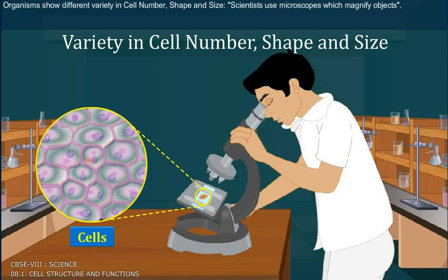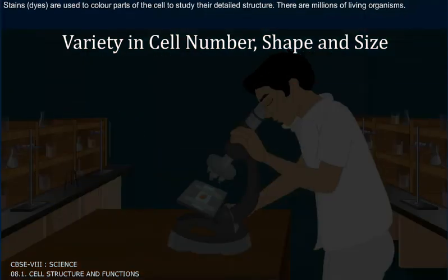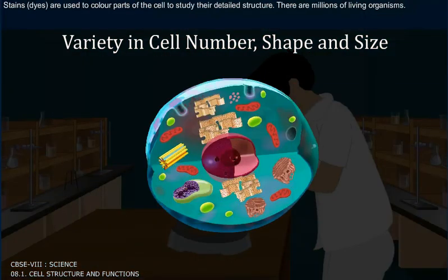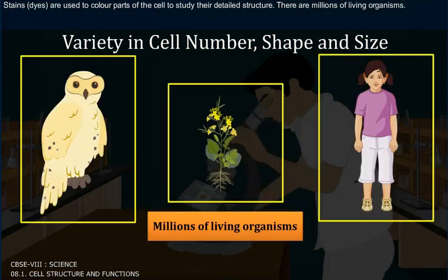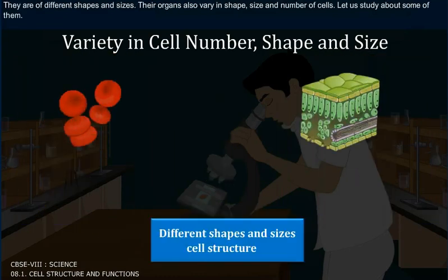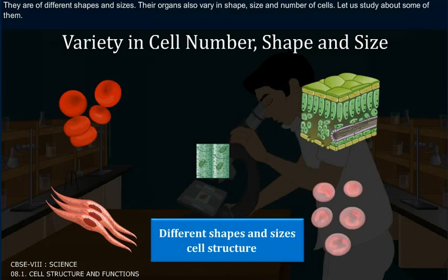Scientists use microscopes which magnify objects. Stains and dyes are used to color parts of the cell to study the detailed structure. There are millions of living organisms of different shapes and sizes. Their organs also vary in shape, size and number of cells.